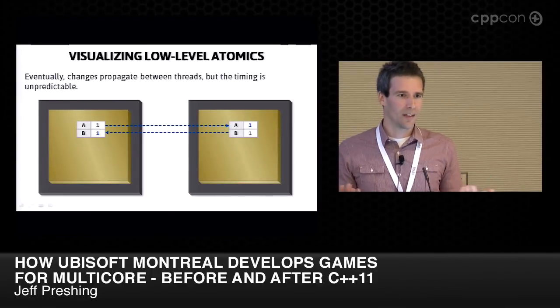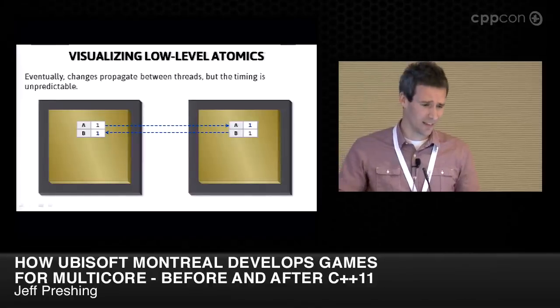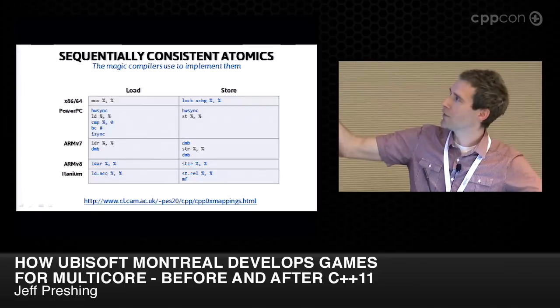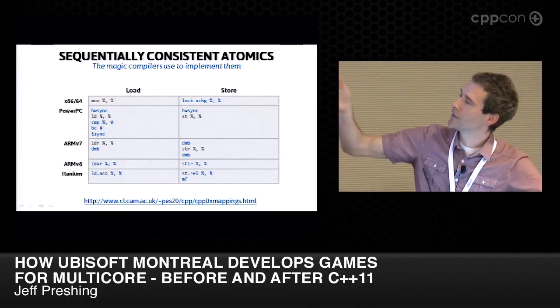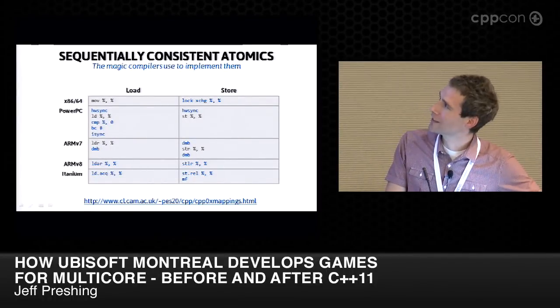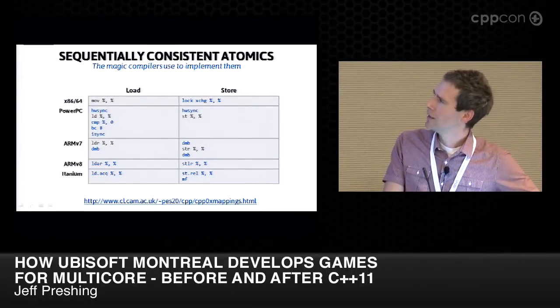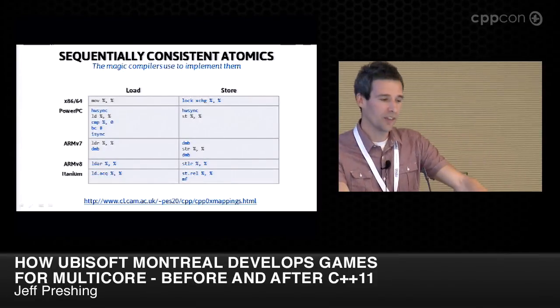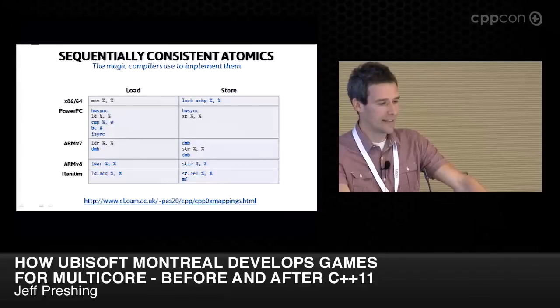If low-level atomics just expose what the processors actually do, how do sequentially consistent atomics work — because processors aren't sequentially consistent? The answer is that for a sequentially consistent load or store, the compiler does gymnastics to convert it to instructions designed to enforce SC guarantees on each platform. On PowerPC, a sequentially consistent atomic load requires five instructions, some of which are heavy. In the latest version of ARM there are new instructions and guarantees on existing instructions designed to translate more natively to sequentially consistent atomics.